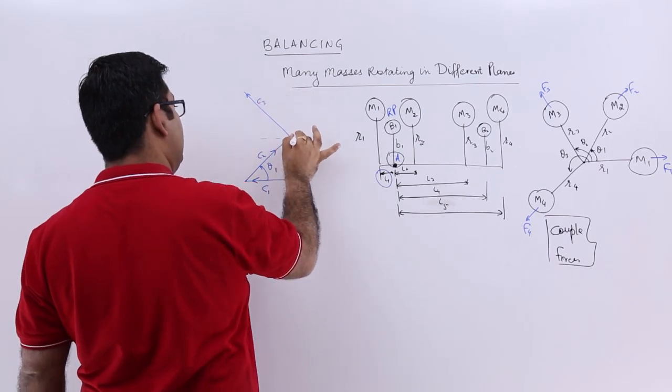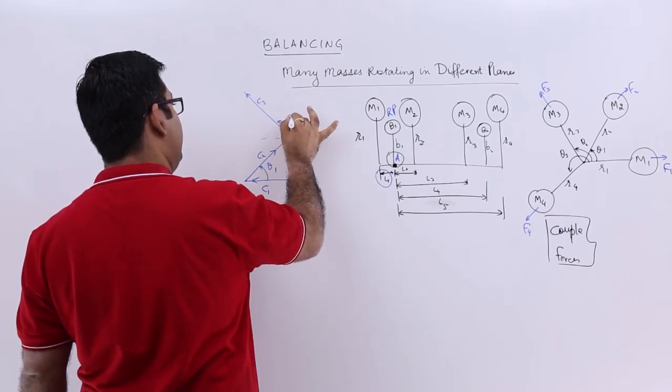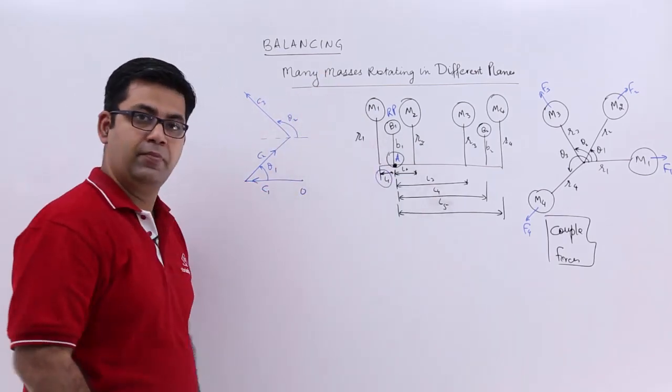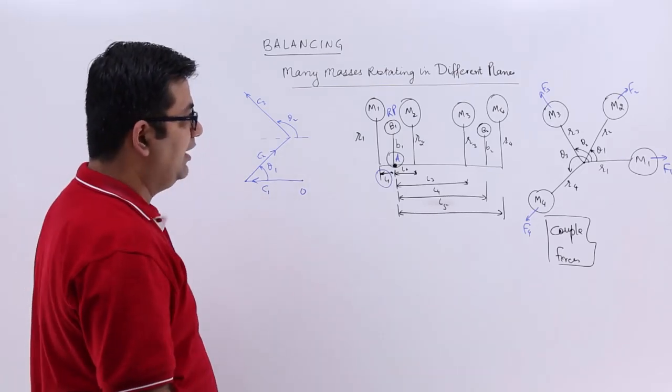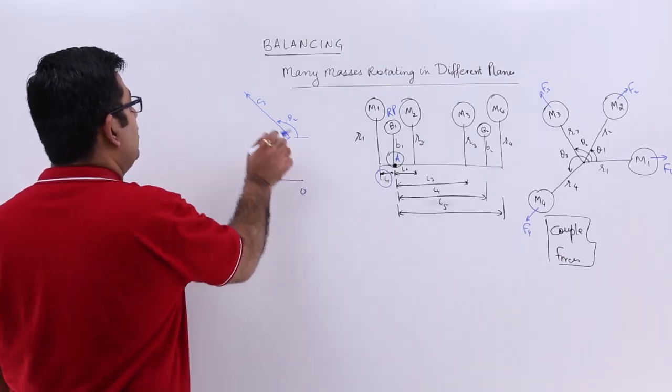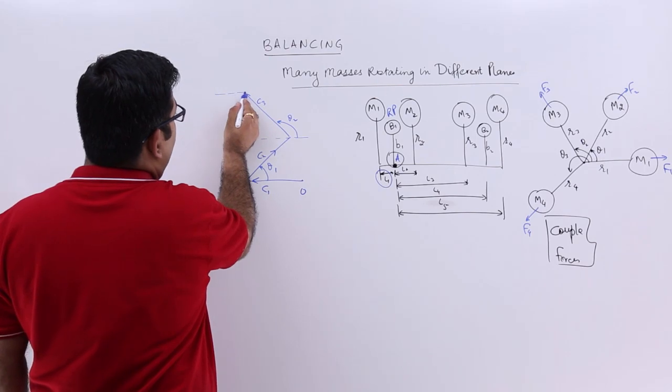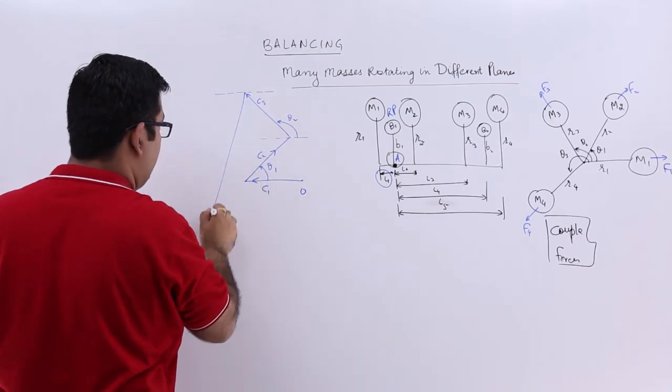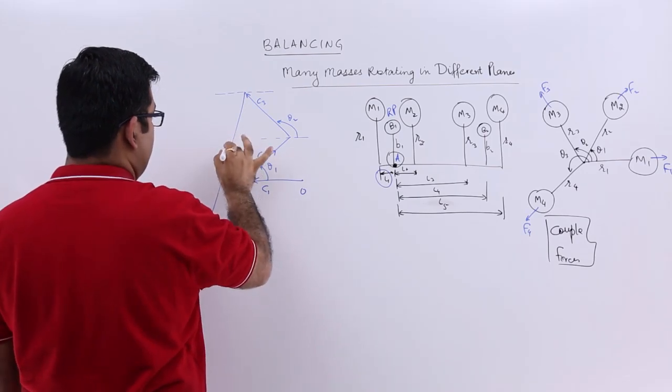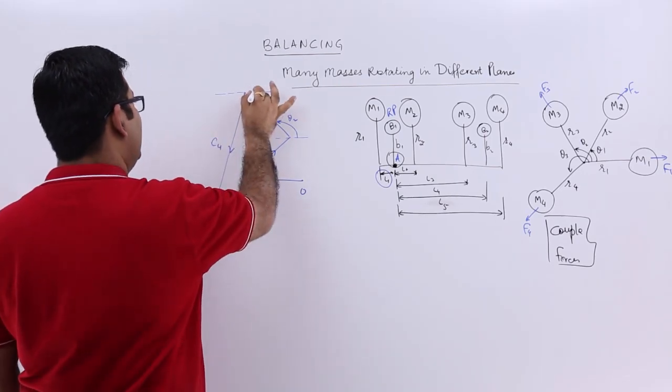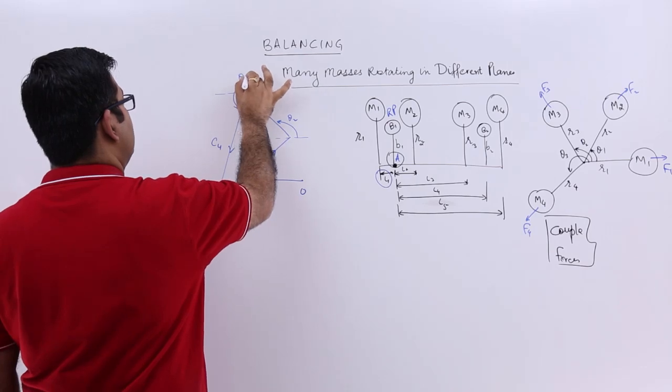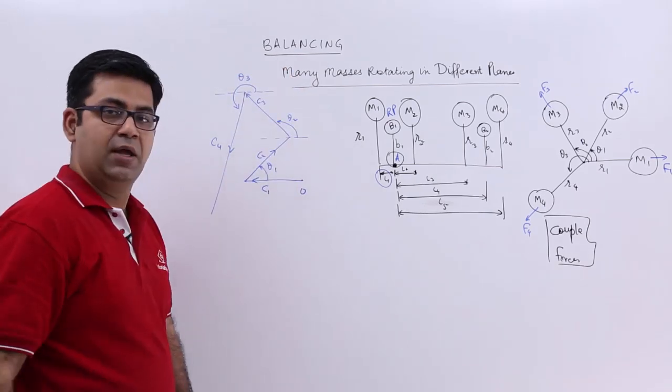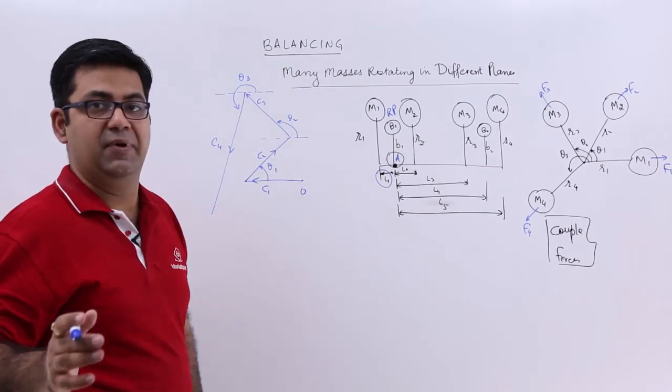And this is theta2. Then from that orientation, we draw C4. And that would be like this. So this is C4. So all this happens by taking a suitable scale. So this is theta3. So we have done with the known couples.